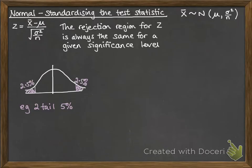It's this 2.5% on either side, which gives you the z value of minus 1.96 and 1.96. So we can define the rejection region as where the modulus of z is greater than or equal to 1.96, or in other words, z is above 1.96 or below minus 1.96.